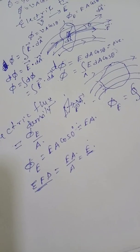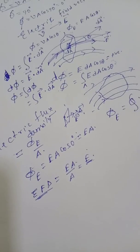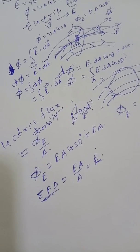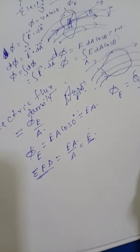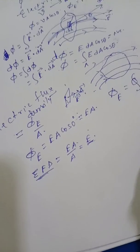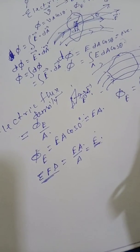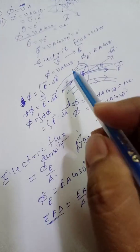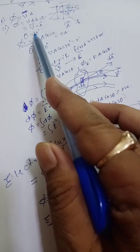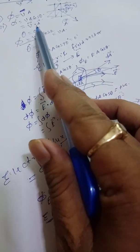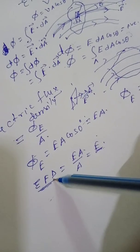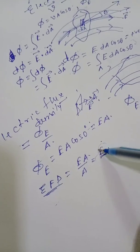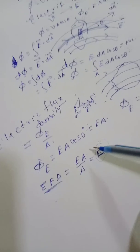Since electric field is a vector quantity, the electric flux density is also a vector quantity, although electric flux is a scalar quantity. This is a very important difference between electric flux and electric flux density. Electric flux is a scalar quantity because it is the dot product of two vectors, but electric flux density is a vector quantity because it is the same as the electric field.